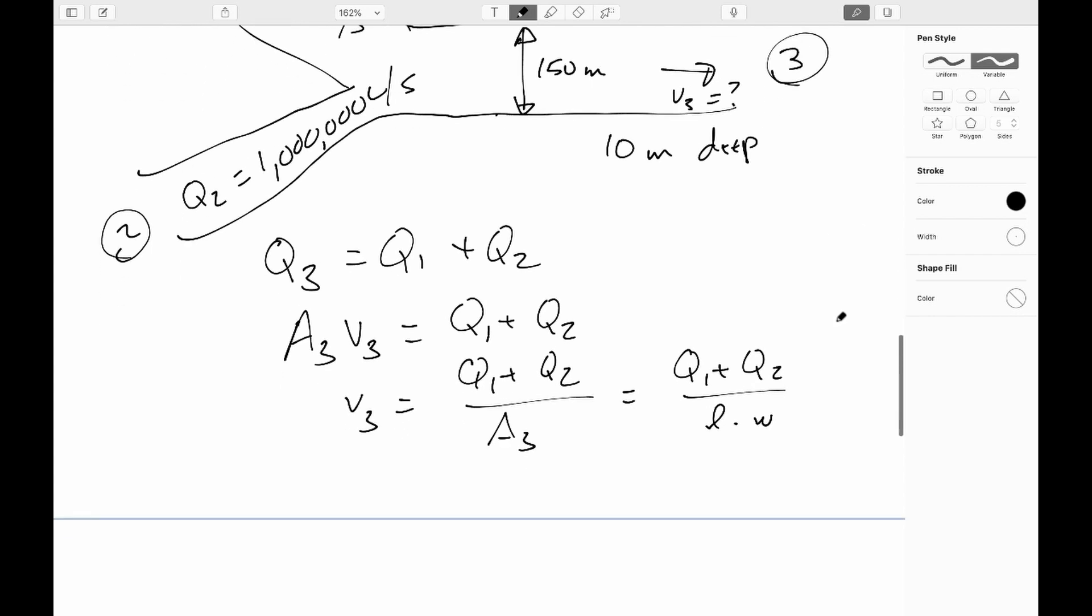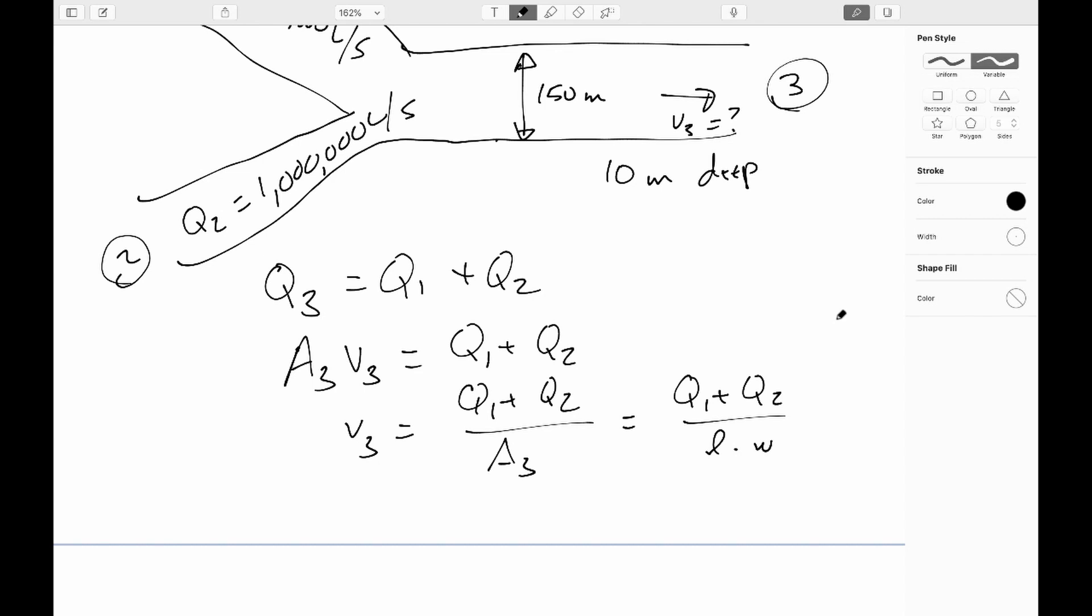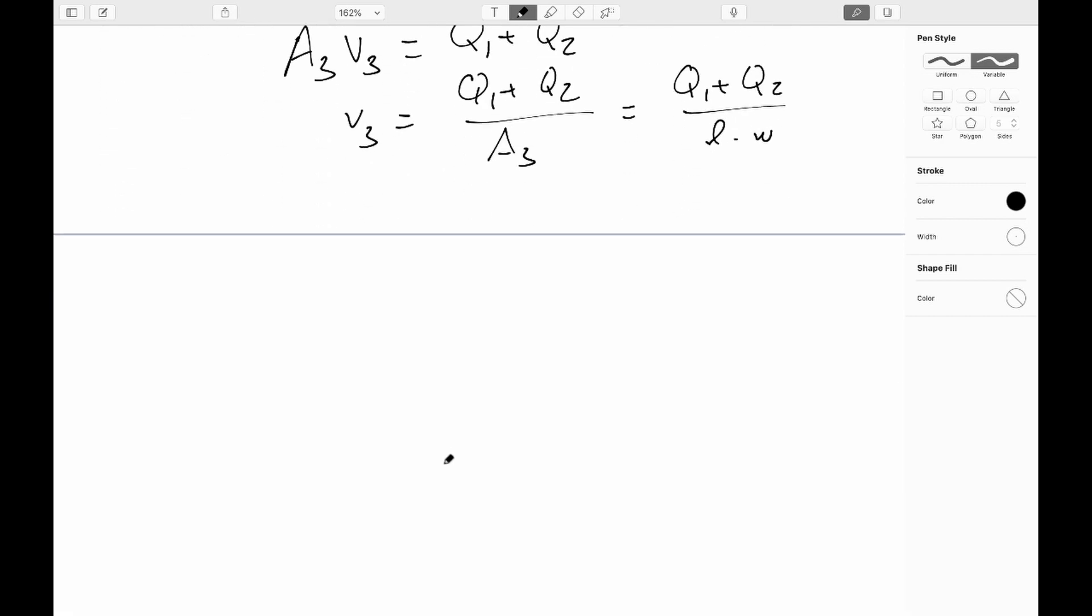One of the things we have to remember is that a liter is a cubic decimeter. So when we are putting in these units, we're going to have to make sure to do our conversions properly. So V3 is going to equal, we say Q1 was 500,000 liters per second plus a million liters per second. And then, because a liter is a cube a tenth of a meter on a side, there are going to be 10 by 10 by 10 of these cubes in a cubic meter, so there's a thousand liters per cubic meter.